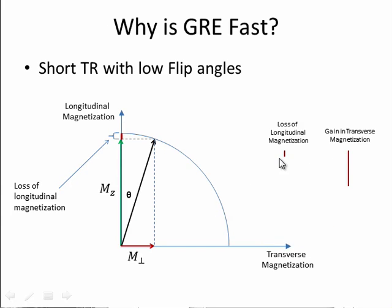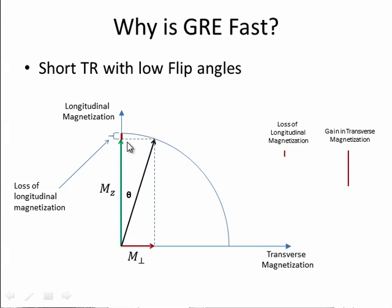If we compare these two — this little section is the loss in longitudinal magnetization, and this section is the gain in transverse magnetization — there is clearly a big difference. So we can use a very short TR because we are able to achieve a large amount of transverse magnetization relative to the amount of longitudinal magnetization that we've lost.